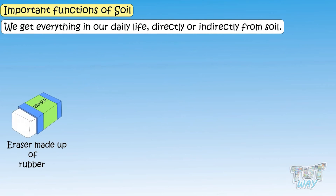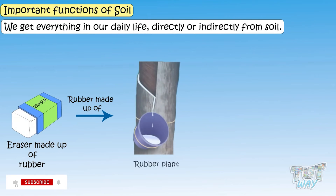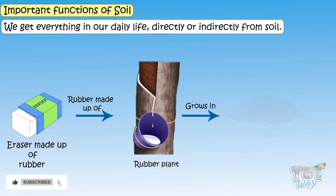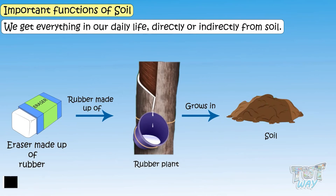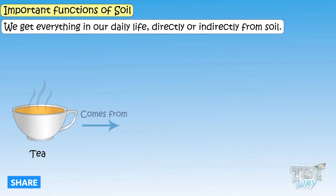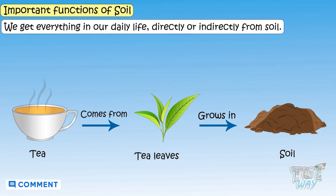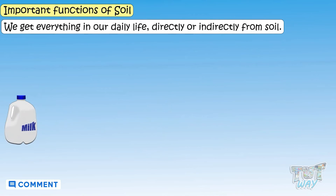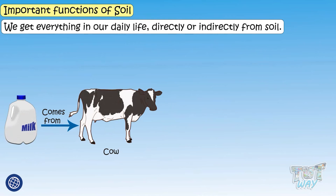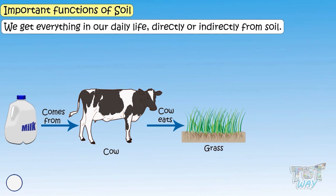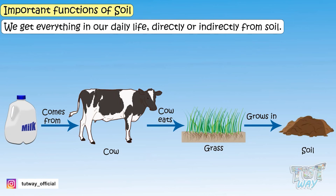Erasers you use come from rubber, and rubber comes from a tree that grows in soil. The tea we drink comes from tea leaves — it's also a plant that grows in soil. The milk we drink comes from a cow, and what does this cow eat? It eats grass, which too is a plant supported by soil. So there is no end to the uses of soil.